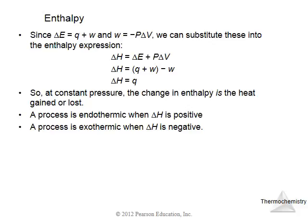In this slide, when work is done by the gas, W is given by P times delta V. So P delta V equals minus W. First we wrote delta E plus P delta V, and delta E is given by heat gained by the system plus work done on the system, Q plus W. And minus W comes from P delta V, which is work done by the gas. So W and minus W cancel out.